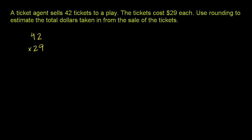If we want to round, we just have two places here, so we're going to round to the nearest 10, because that's the largest place we have. If we round 42 to the nearest 10 — we've done this drill many times — 2 in the ones place is less than 5, so we're going to round down. The nearest 10 is 40.